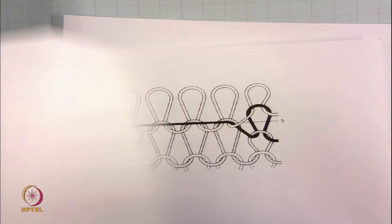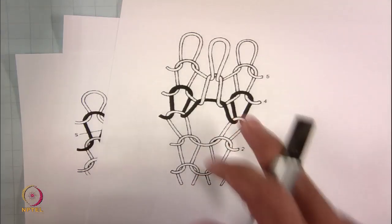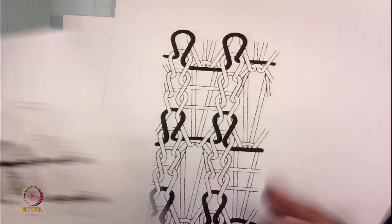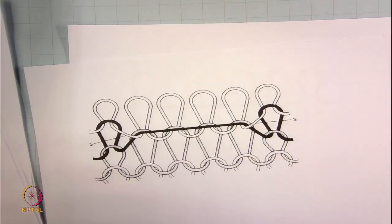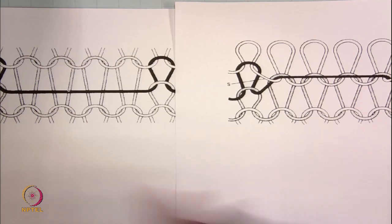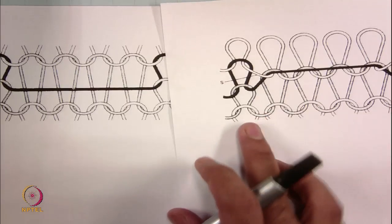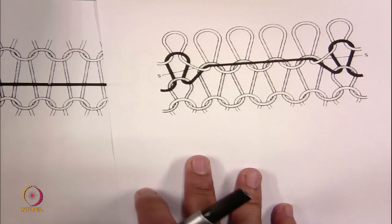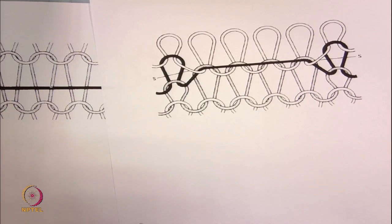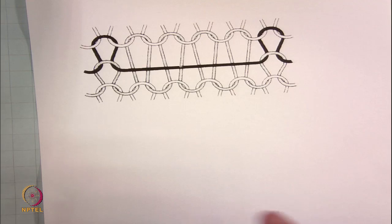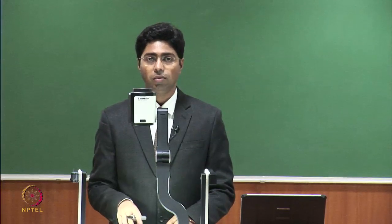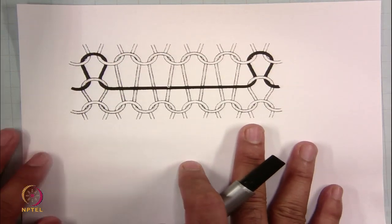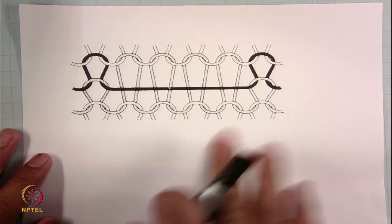We are going to cover fabric structures where the yarn path is highly complicated. Some of these structures involve tuck and float, where multiple needles are involved in tuck and float formations. In the last lecture, you saw examples with just one float created by a needle. In some fabric structures, the number of needles making floats may be more than one, two, or three. For example, in this fabric structure, four floats are being made by four needles.